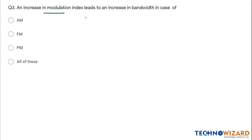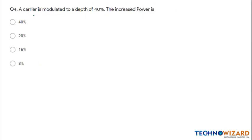Question 3: An increase in modulation index leads to an increase in bandwidth in the case of frequency modulation. Option B is the correct answer.